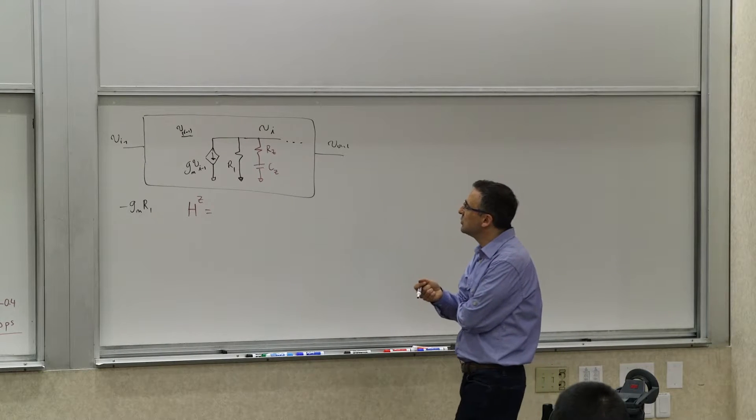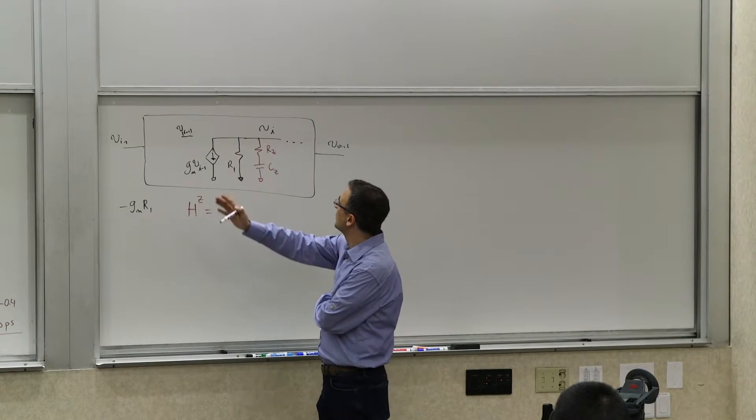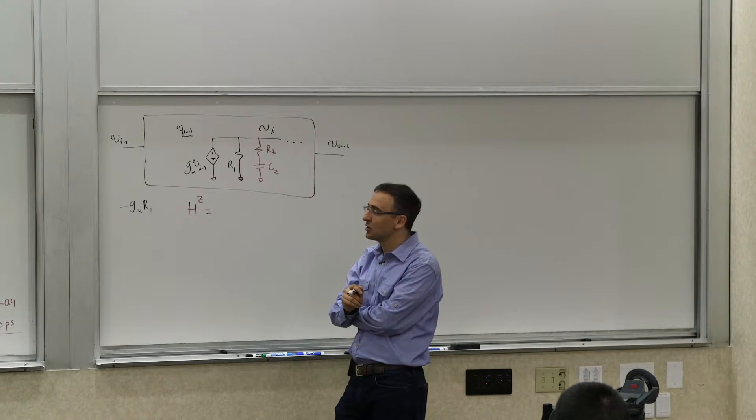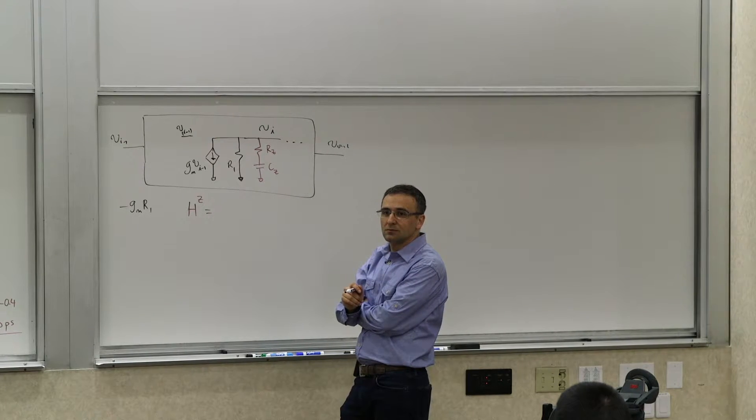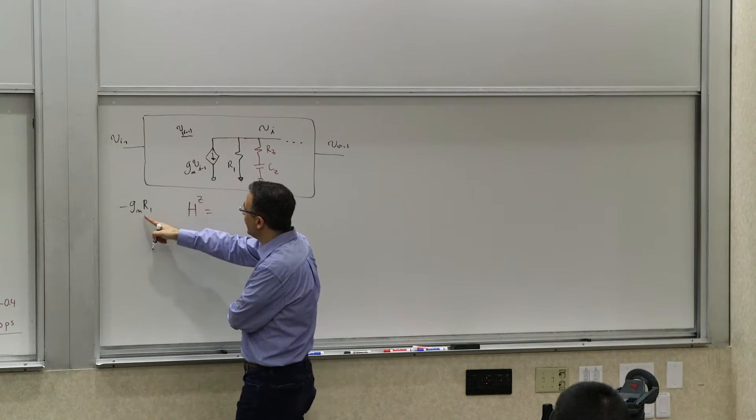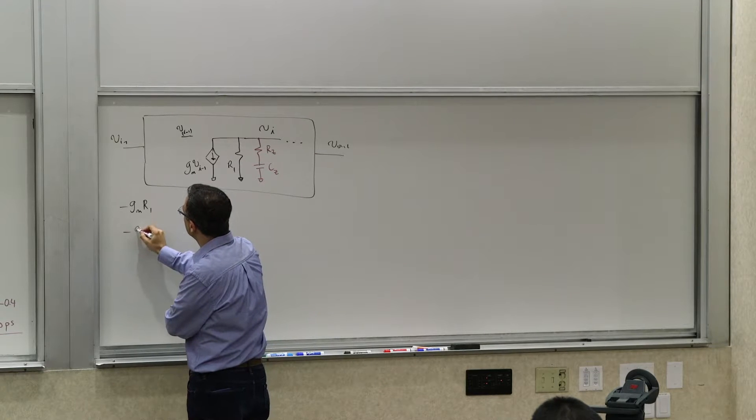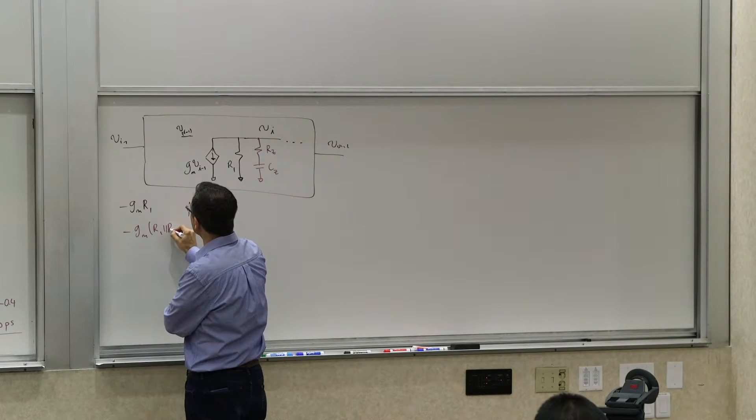What is that? What is the new gain? How would your overall gain of this amplifier change? Yeah, so this becomes negative GM R1 parallel Rz, right?